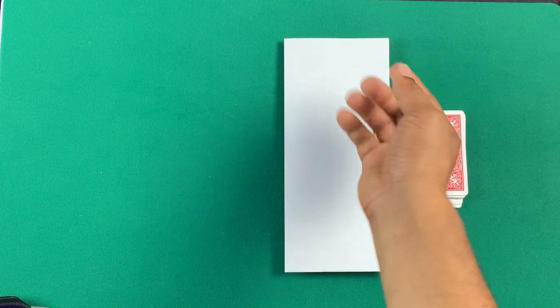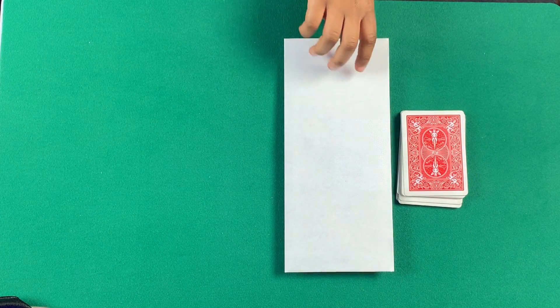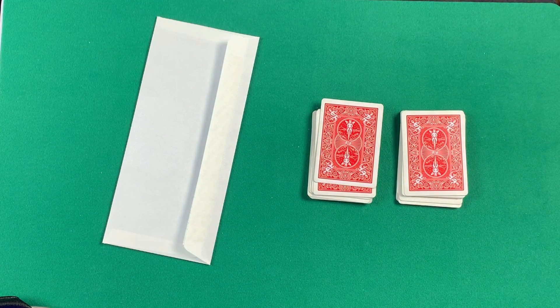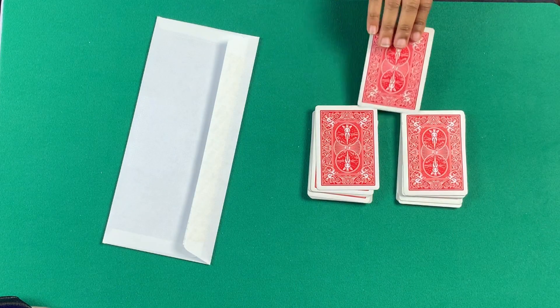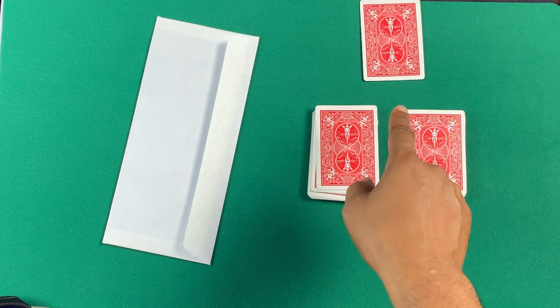So, what I want you to do is I want you to take the envelope and just turn it over on the side. Just turn it over, sit it on the side. That's perfect. And I want you to take that top card off. Sit it right here. Perfect. Now, you don't know what that card is, right?